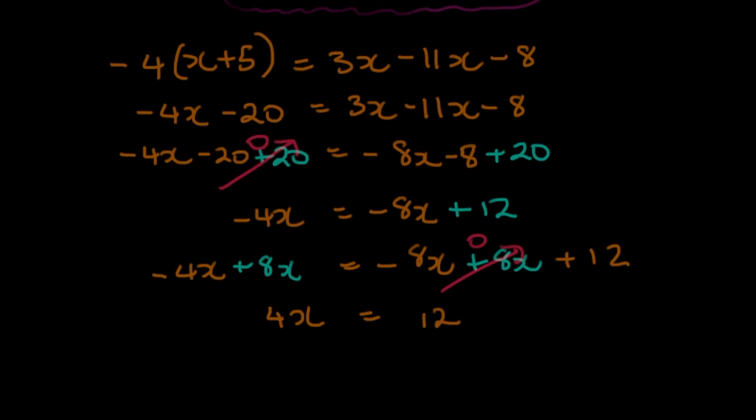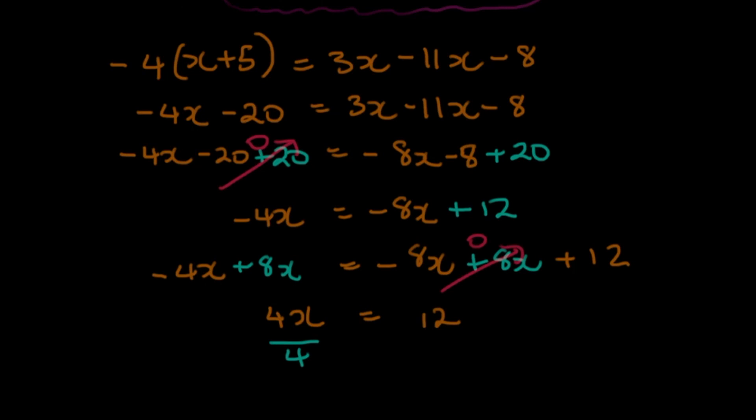Now we have that 4x is equal to 12. Mr. 4, you know the drill. He's attached to the x. So we must divide both sides by 4. We'll divide both sides by 4 here. 4 divided by 4. That's simply going to leave the x. And what is 12 divided by 4? Well, that is simply 3. Very, very easy.